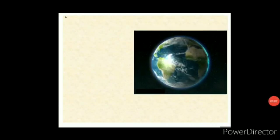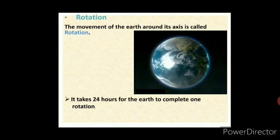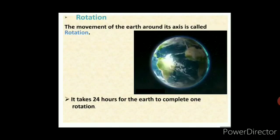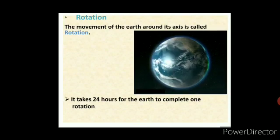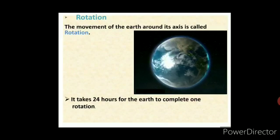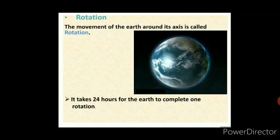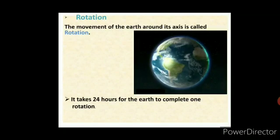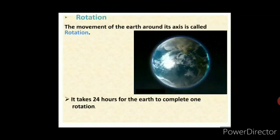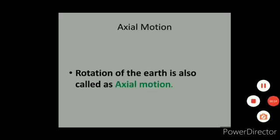Our next topic is rotation. The movement of the earth around its axis is called rotation. It takes 24 hours for the earth to complete one rotation, which is equal to one day. The occurrence of day and night is the result of rotation of the earth. Rotation of the earth is also called axial motion.